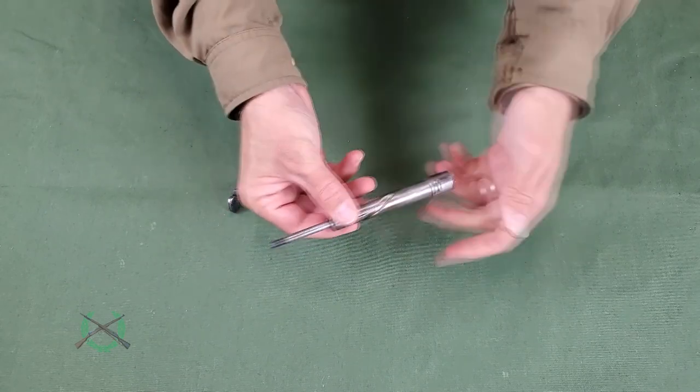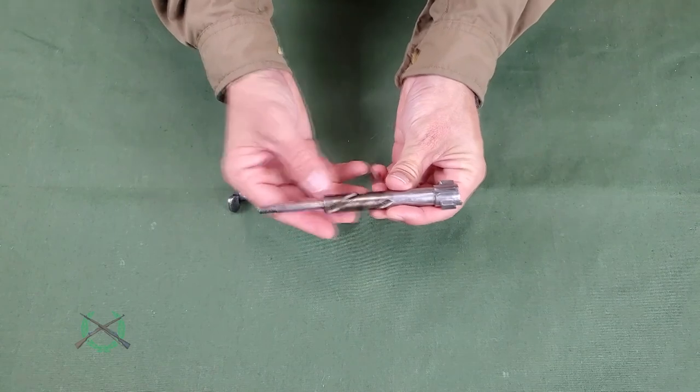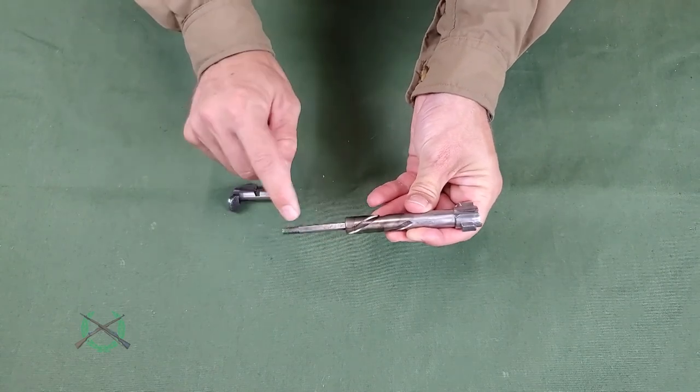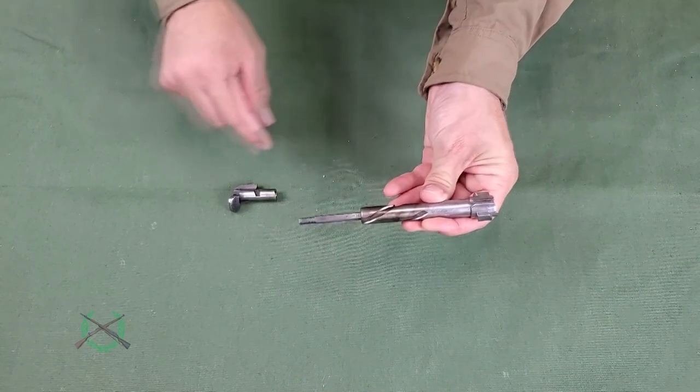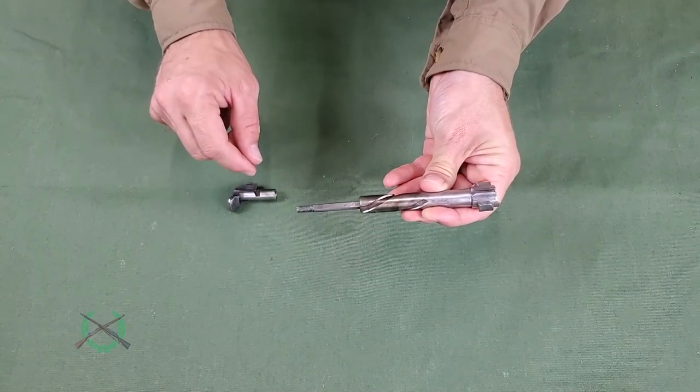Ensure the cam track in the bolt head and retaining nut are aligned. Orient the flat side of the firing pin in the same direction as the ejector groove on the bolt head by rotating the firing pin.